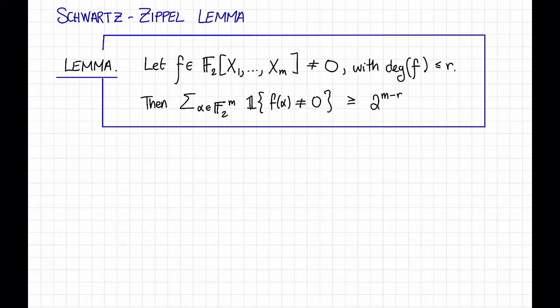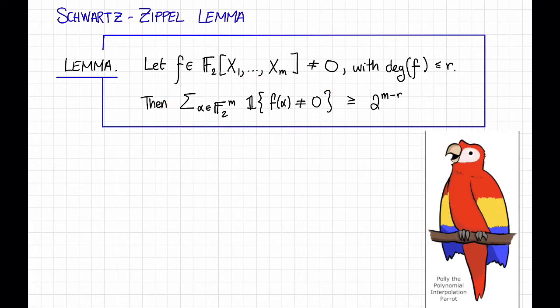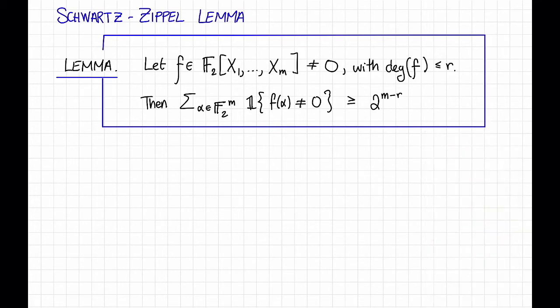The flavor of this lemma might look familiar. Right! Low-degree polynomials don't have too many roots. Thanks, Polly. Yeah, so this is basically saying that low-degree multivariate polynomials don't have too many roots.